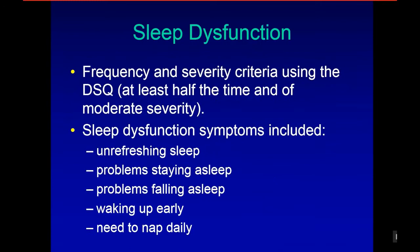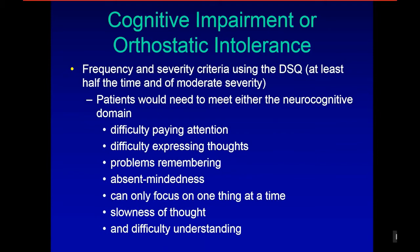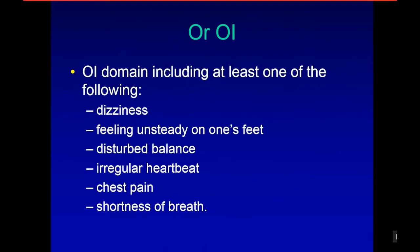For sleep dysfunction, we use frequency and severity — at least half the time, moderate severity — on items including non-refreshing sleep. For cognitive impairment, we assess items like difficulty paying attention and difficulty expressing thoughts. For orthostatic intolerance, we require at least one of the following with frequency and severity criteria: dizziness, feeling unsteady on one's feet, disturbed balance, and others.